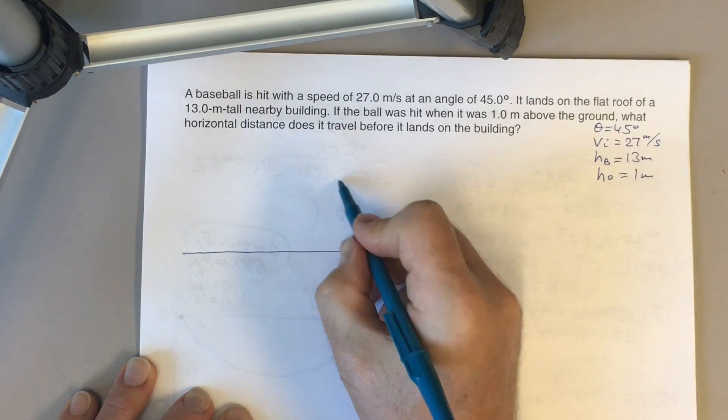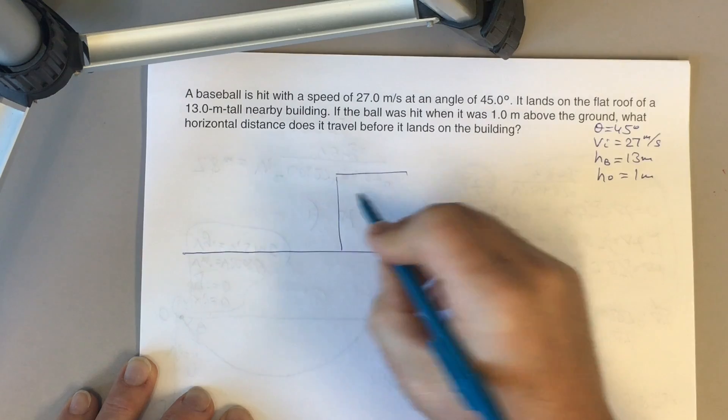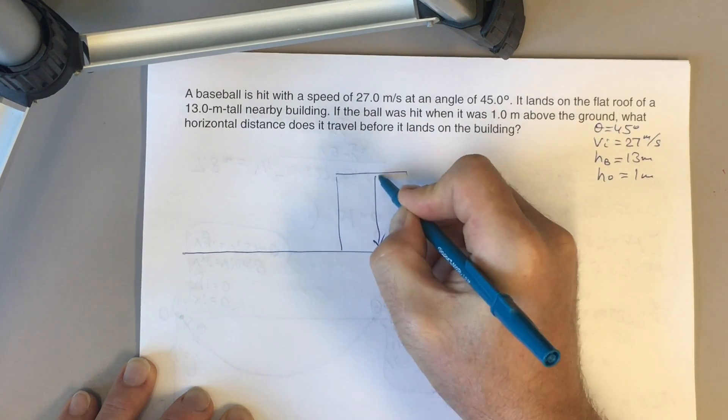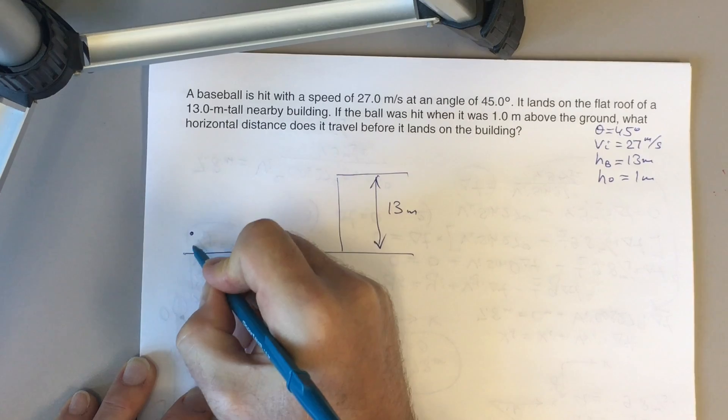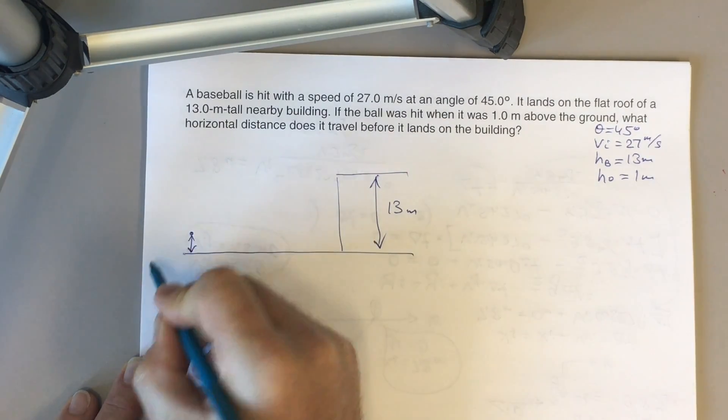So we have the ground, we have the building with height 13 meters, and we have the initial point at height 1 meter.